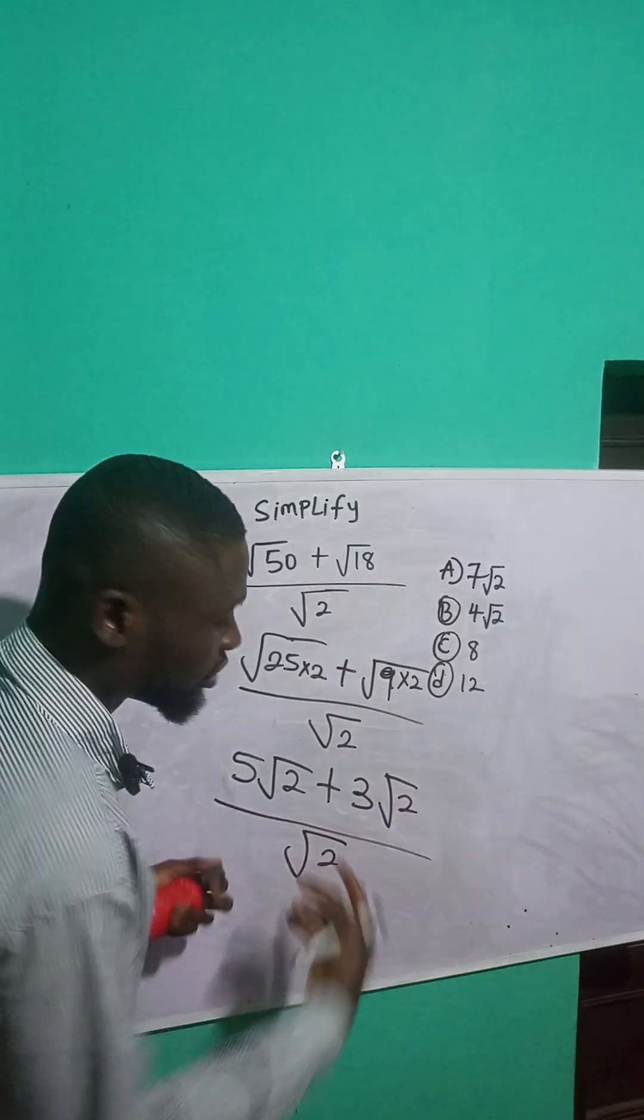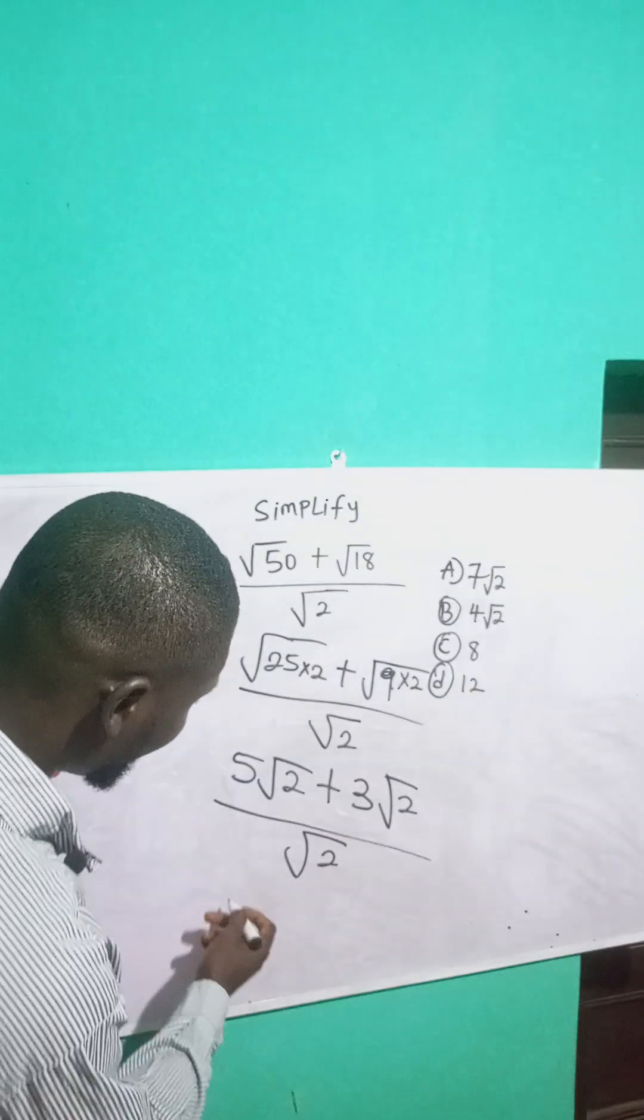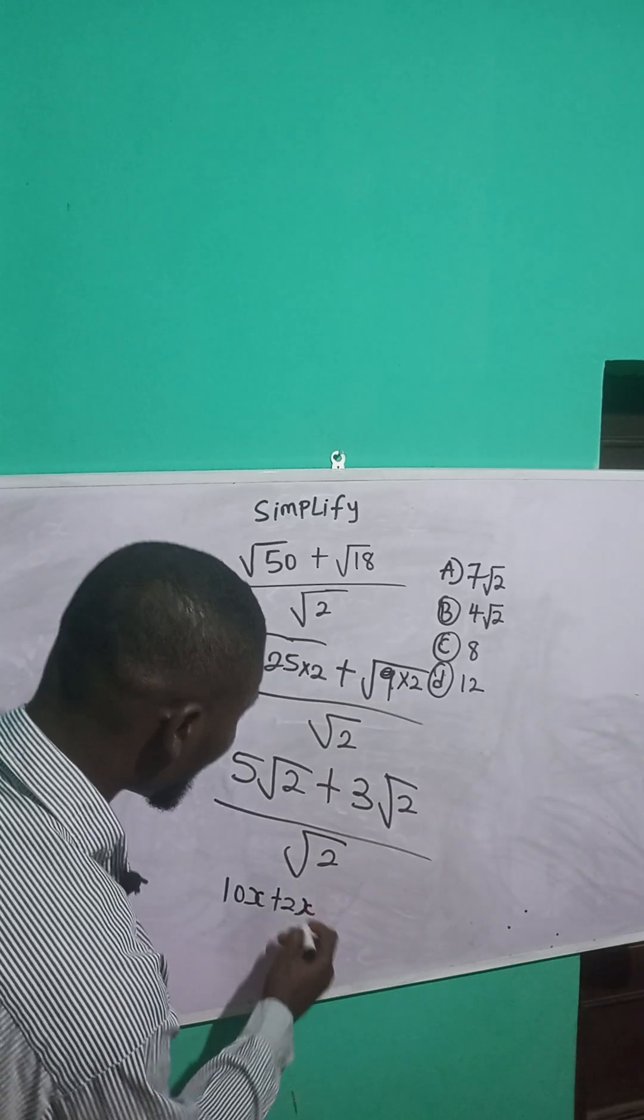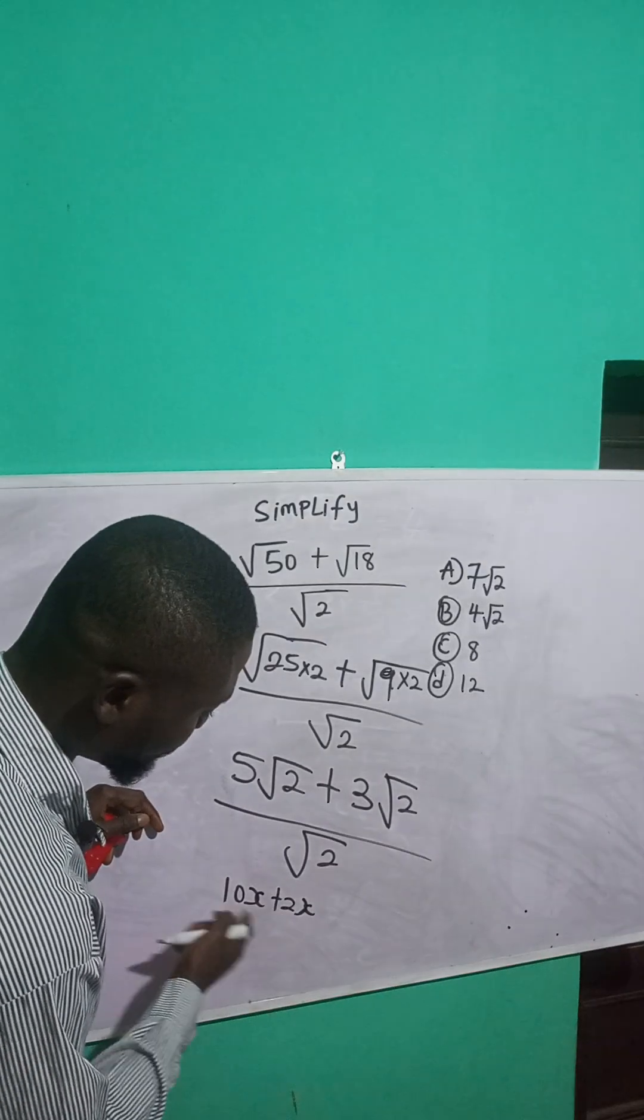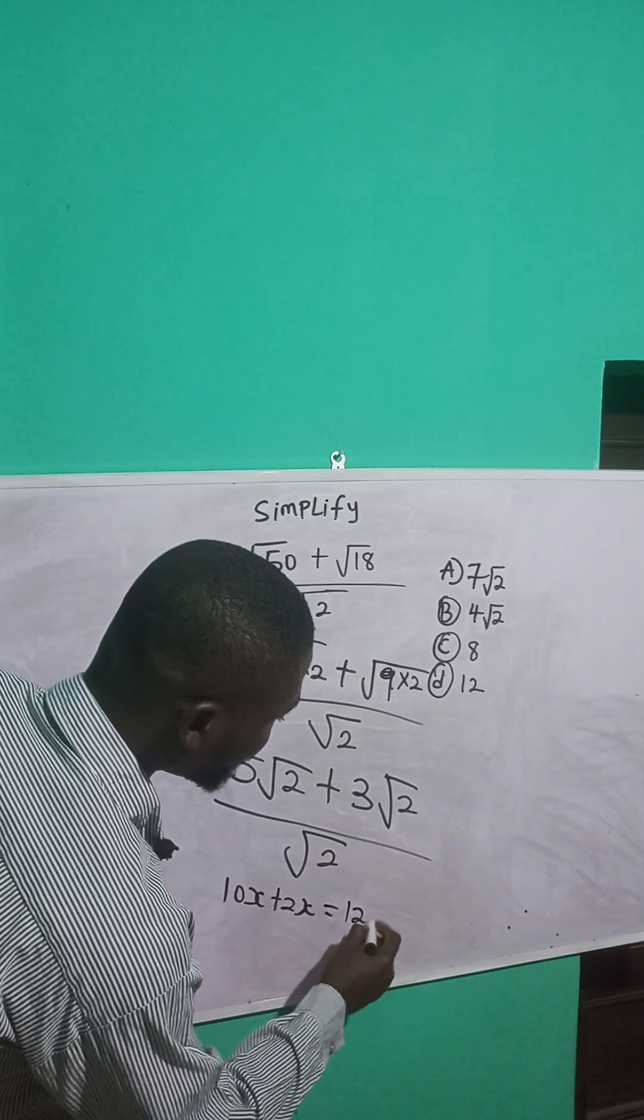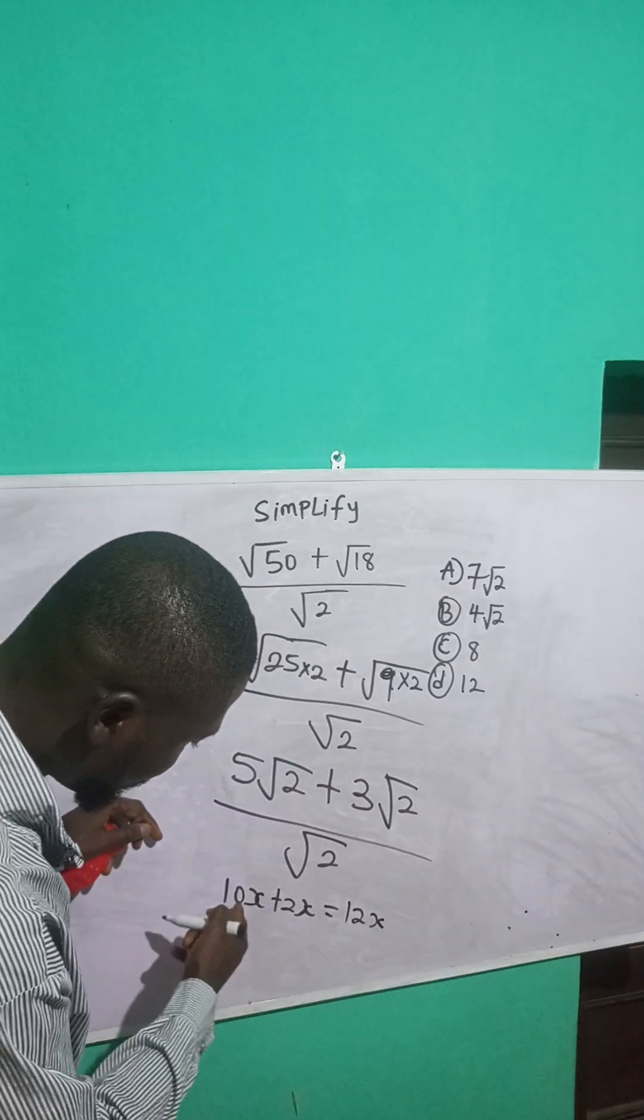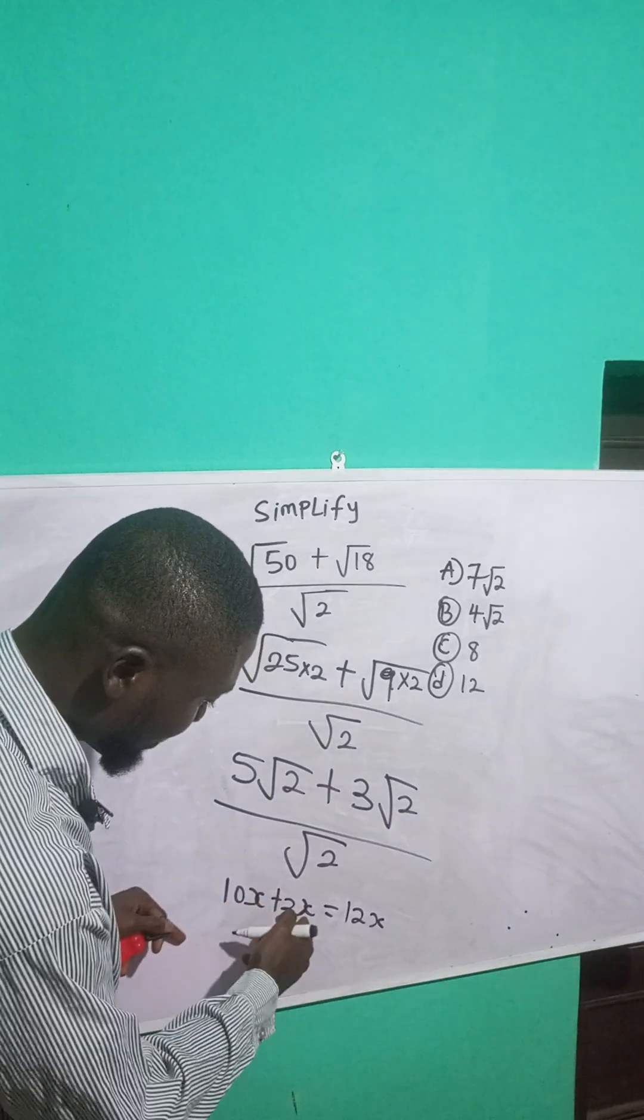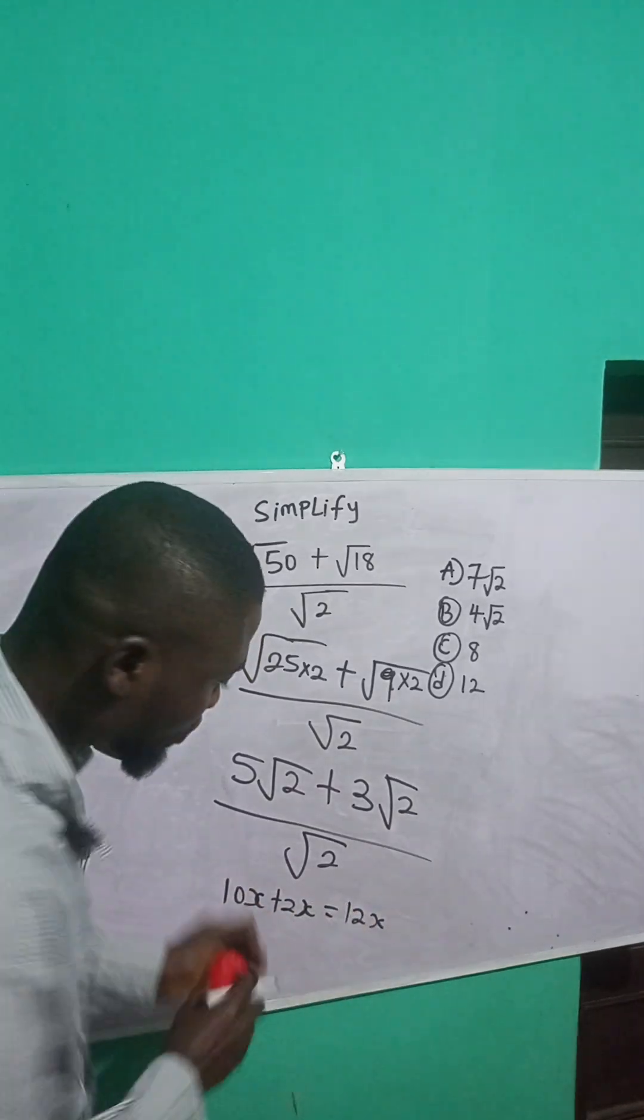I want you to treat this like algebra. For example, if you have 10x plus 2x, you add the coefficients of x, which are 10 and 2. That gives you 12x. You maintain x since x is common. So what I'm going to do here is add the coefficients. Root 2 is common, so I'll keep √2.